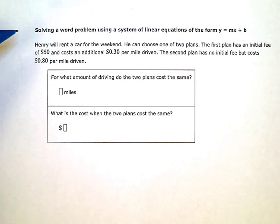Our problem says Henry will rent a car for the weekend. He can choose one of two plans. The first plan has an initial fee of $50 and costs an additional $0.30 per mile driven. The second plan has no initial fee but costs $0.80 per mile driven.